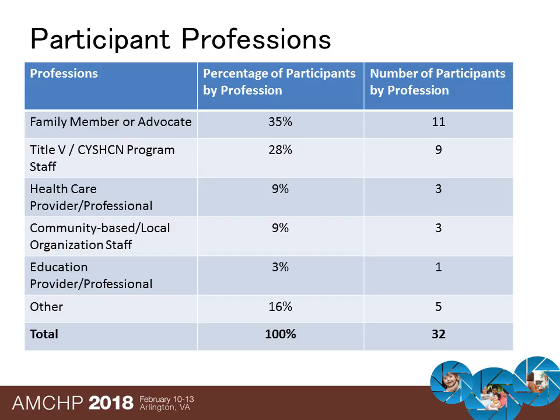Based on the survey results, most respondents identified themselves as a family member or advocate. The next largest profession represented was Title V Children with Special Health Care Needs Program staff. And then there was a fairly equal split between respondents who identified as health care provider or professional, community-based or local organization staff, other, and educational provider or professional.